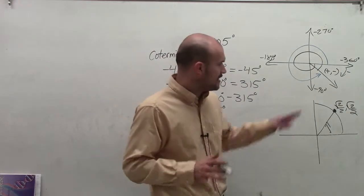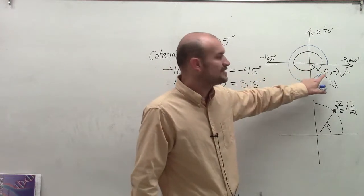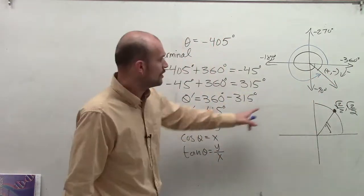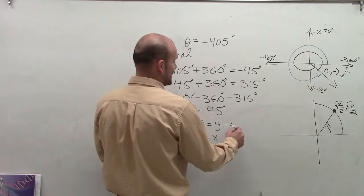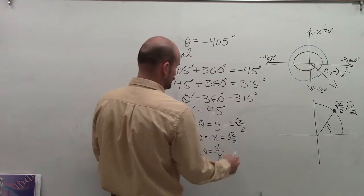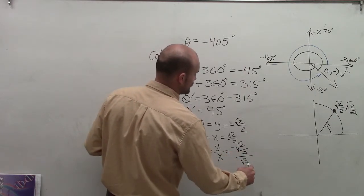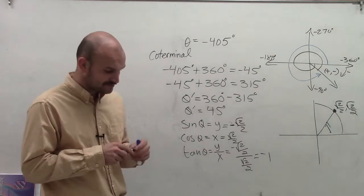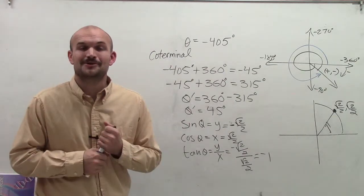It's important to remember that even though we're using the reference angle to evaluate, our initial angle is in the fourth quadrant. Therefore, my y-value is going to be negative. So sine is going to be negative square root of 2 over 2. The cosine is going to be positive square root of 2 over 2. And the tangent is going to be negative square root of 2 over 2 divided by square root of 2 over 2, which reduces to negative 1. That's how you find your reference angle when given a negative angle to evaluate for sine, cosine, and tangent. Thanks.